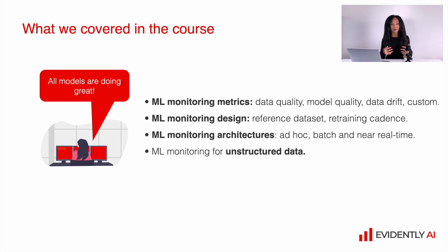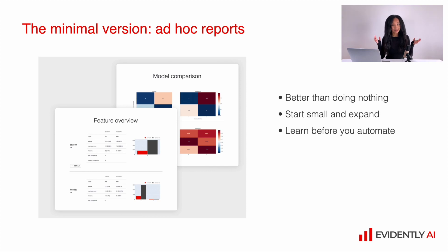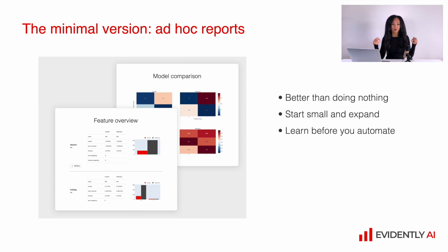We discussed how we can build up the monitoring system for text and embeddings data. We started from the minimal version of monitoring, which is ad hoc reports and test suites. This is definitely easy to implement and a great start, because we always need to monitor our machine learning models in production — having this ad hoc system is much better than having nothing. So do not hesitate to start from individual reports and test suites. This is a really smart start and you can learn quite a lot about your data and model quality before you build up a solid monitoring system — it's also very good for designing and learning what's going on with your service.